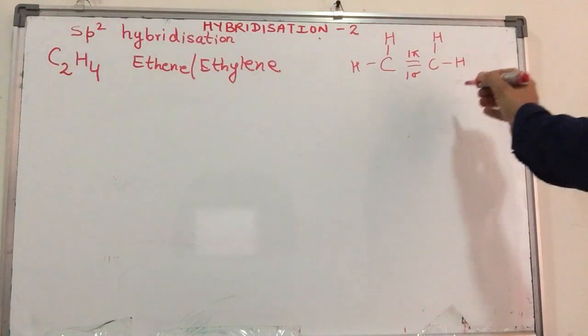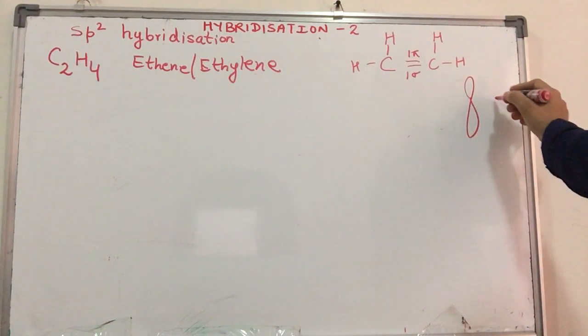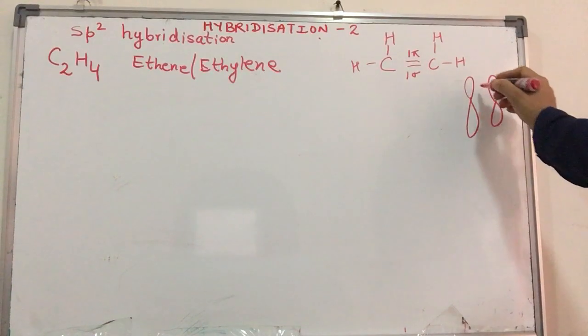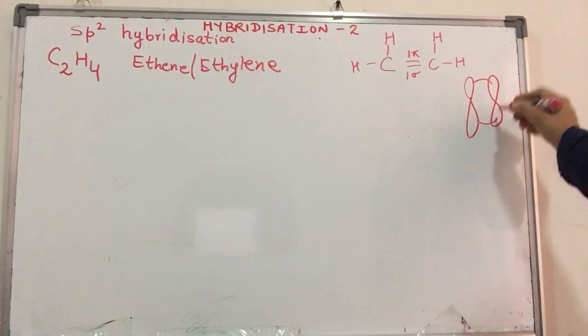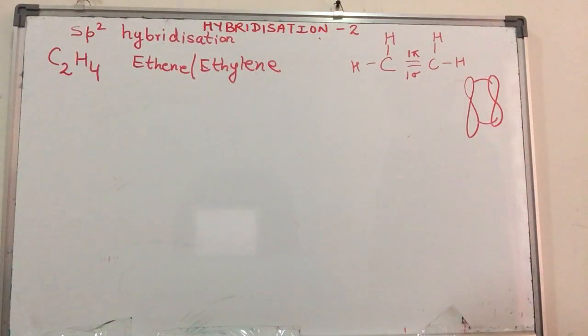Now secondly, we also know that when we are talking about a pi bond, a pi bond involves the overlap of both the lobes, the top and the bottom, like we have shown for p orbitals over here.